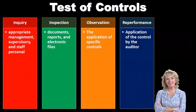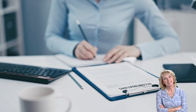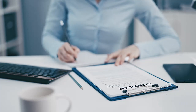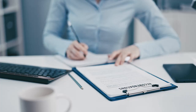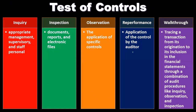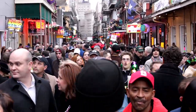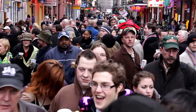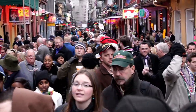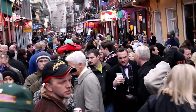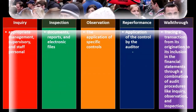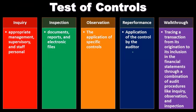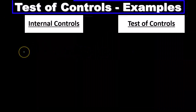We can also use re-performance, which is the application of the control by the auditor. We actually re-perform some of the controls to see if they are done correctly — take a sample, re-perform, and double-check. A walkthrough is where we trace a transaction from its origination to its inclusion in the financial statements through a combination of audit procedures like inquiry, observation, and inspection, following something through the process from start to where it ends up on the financial statements.